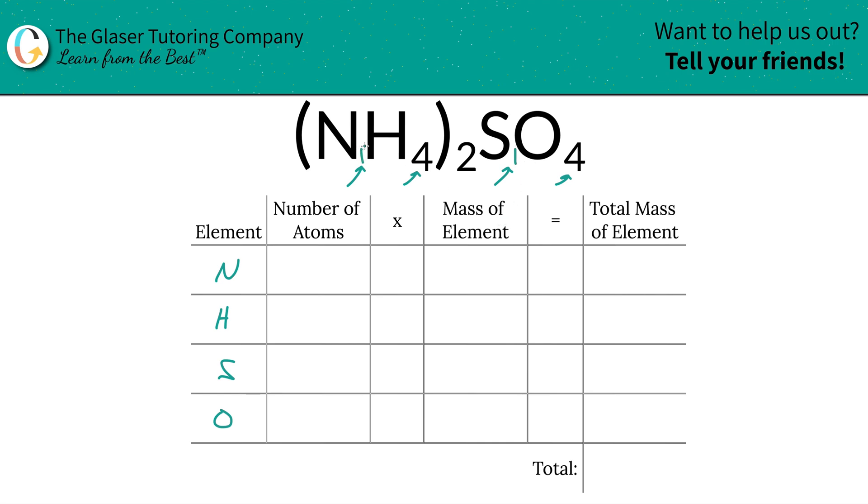So now to find the total number of nitrogens, you have to take the subscript of nitrogen and multiply it by the outer subscript outside those parentheses to find the total. So you have two nitrogens. Similarly, you would do the same thing for hydrogen. Take the four, multiply it by the outer subscript of two, so you have eight hydrogens.